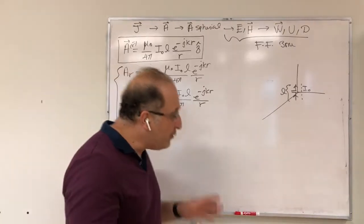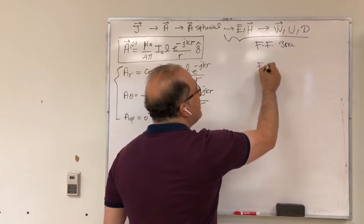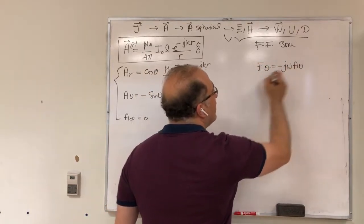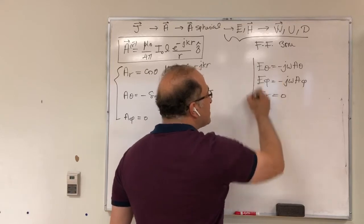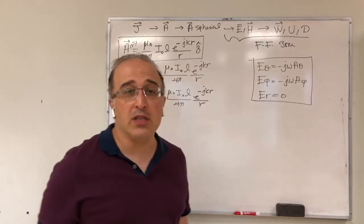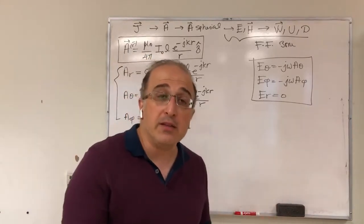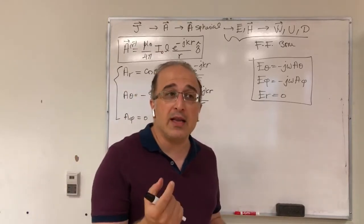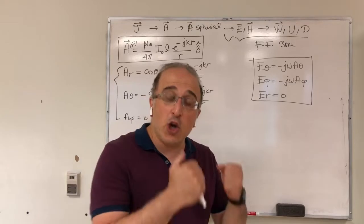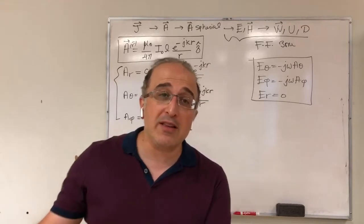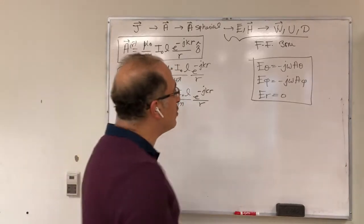If I wanted only the far field, the next step would be: E_θ = −jωA_θ, E_φ = −jωA_φ, and E_R = 0. That's the far-field-only approach and the focus of our course. But now let's not restrict to far field — I also want to include near field, not just out of curiosity, but to understand what happens with power density in the near field and compare it to the far-field power density from the previous lecture.